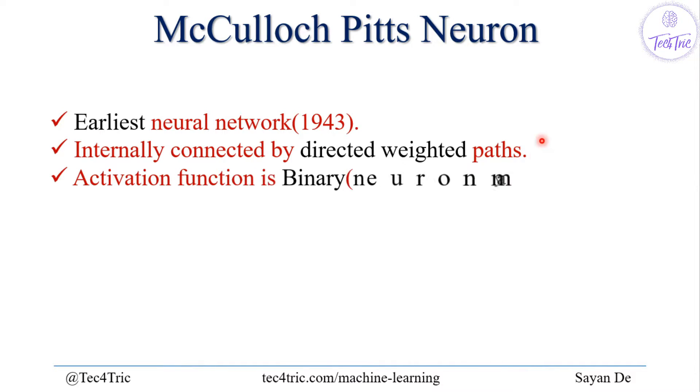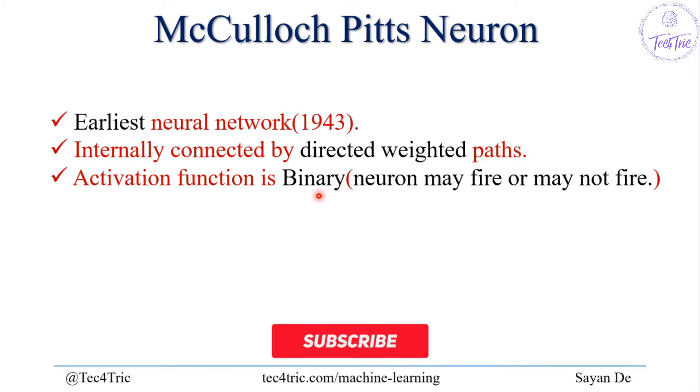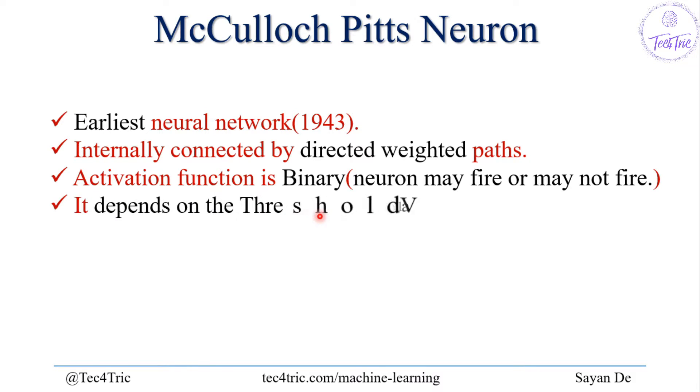The activation function of McCulloch-Pitts Neuron is binary. Binary means 1 or 0. Basically the neuron may fire or may not fire. The neuron may produce the output or may not produce the output, and it totally depends on the threshold value.